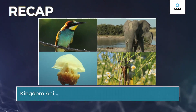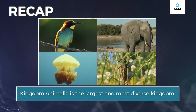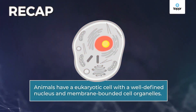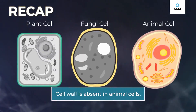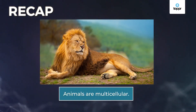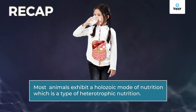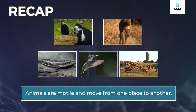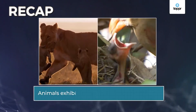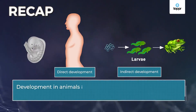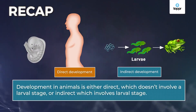Let's have a quick recap. Kingdom Animalia is the largest and most diverse kingdom. Animals have a eukaryotic cell with a well-defined nucleus and membrane-bound cell organelles. Cell wall is absent in animal cells. Animals are multicellular. Animals have a heterotrophic mode of nutrition, and most animals exhibit a holozoic mode of nutrition, which is a type of heterotrophic nutrition. Animals are motile and move from one place to another. Animals exhibit a sexual mode of reproduction. Development in animals is either direct, which doesn't involve a larval stage, or indirect, which involves a larval stage.